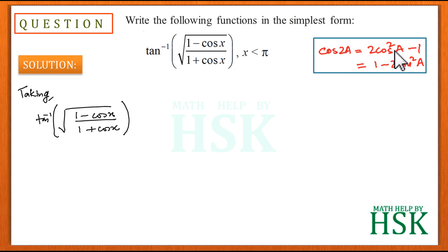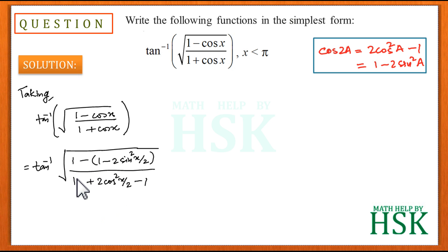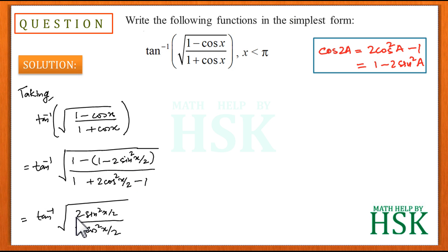We use the identities: cos 2a = 2cos²a − 1, and also cos 2a = 1 − 2sin²a. So I write cos x in the numerator as (1 − 2sin²(x/2)) and in the denominator as (2cos²(x/2) − 1). The 1s cancel in both numerator and denominator, giving us tan inverse of square root of (2sin²(x/2)) upon (2cos²(x/2)).